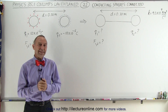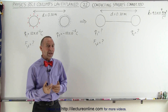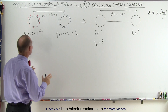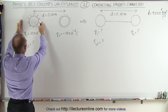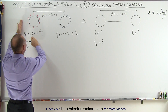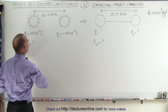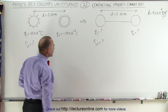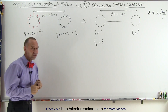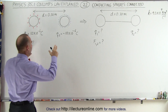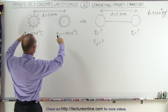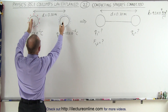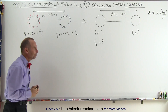Welcome to iLectronLine. In this example, we're starting out with two charges: a positive charge of 12 times 10 to the minus 6 coulombs, and a negative charge of minus 18 times 10 to the minus 6 coulombs. The charges are on two conductors that are at a distance of 0.3 meters apart.